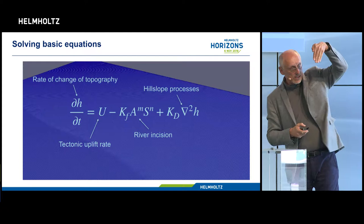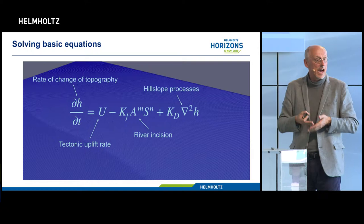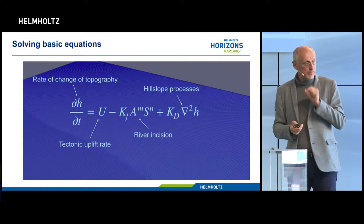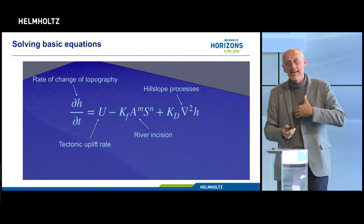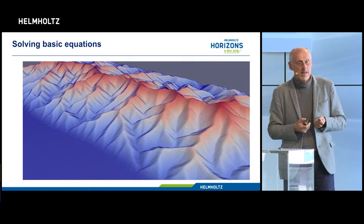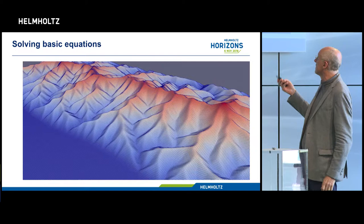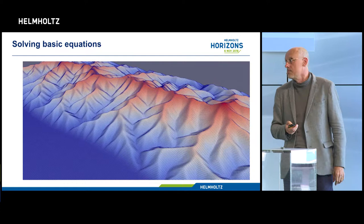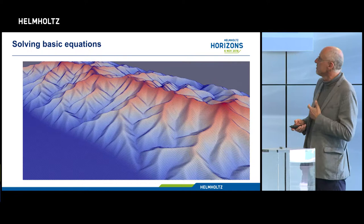Once a river incises into the landscape it forms a valley, and along the sides of the valley other processes take place — that's the second term in the equation. So we have a full description of the processes at every point of the landscape. The computer models integrate these equations to produce something that looks like a landscape. We can predict the shape of a mountain, the spacing between valleys, and the profile of a river as we go up the mountain.